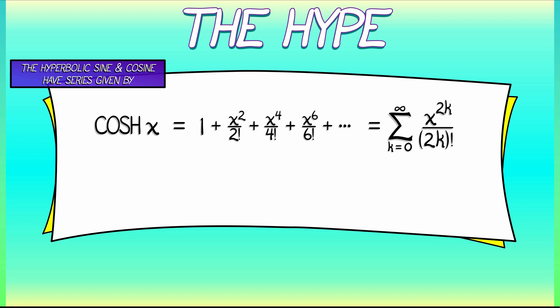The hyperbolic sine, in contrast, is all of the odd powers of the exponential function. In summation notation, we can write that as the sum k goes from 0 to infinity x to the 2k plus 1 divided by quantity 2k plus 1 factorial.